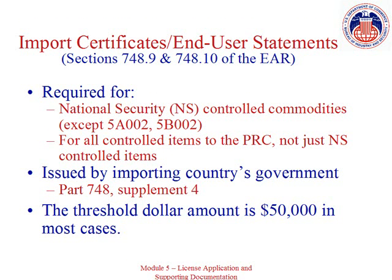An international import certificate or end user statement may be required if your item is controlled for national security reasons and is being exported to one of the countries that issues such certificates or statements. Some governments issue import certificates while others issue end user statements. In the case of export license applications to the People's Republic of China, a support document is required for any item, not just those controlled for national security reasons. An import or end user statement is issued by the government of the importing country, and exporters must have their customer in the foreign destination apply for the certificate or statement. A list of these government issuing authorities and their addresses is available in Supplement No. 4 to Part 748. In most cases, the certificate or statement is not required if the dollar value of the transaction is $50,000 or less. There is no longer any requirement to submit import certificates and end user statements with a license application, but they must be kept on file.